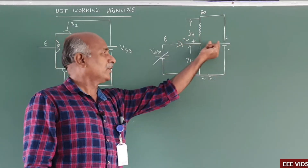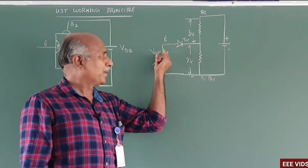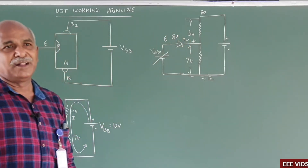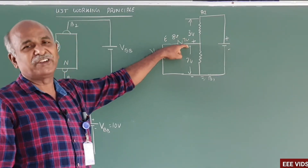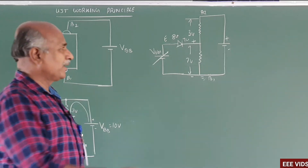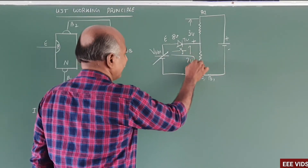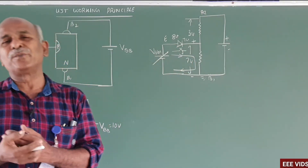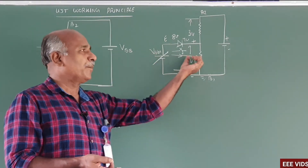The cathode has 7 volts. When the emitter voltage on the anode side exceeds 7 volts — for example, 8 volts on the anode versus 7 volts on the cathode — the anode has higher potential, so the diode becomes forward biased and acts as a closed switch. Then current flows through the emitter to base-1.